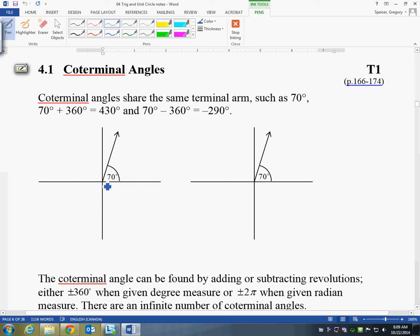So just as a quick review, here is your initial arm. And in this case, the terminal arm is 70 degrees away. It's a positive angle, it's plus 70. So therefore it's going counterclockwise, it's going in this direction here.